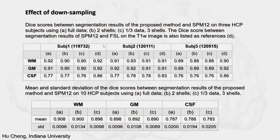This method is robust against downsampling. We compared the dice score between segmentation results of the proposed method and SPM12 on three HCP subjects using: A, the full dataset; B, two-shell data with b-values of 1000 and 2000; and C, only one-third of the data but still three shells. We also compared the dice score between SPM12 and FSL. The results show that there is not much difference with downsampling — the dice score is still around 0.9 for both gray matter and white matter, which is comparable to the dice score between FSL and SPM12.